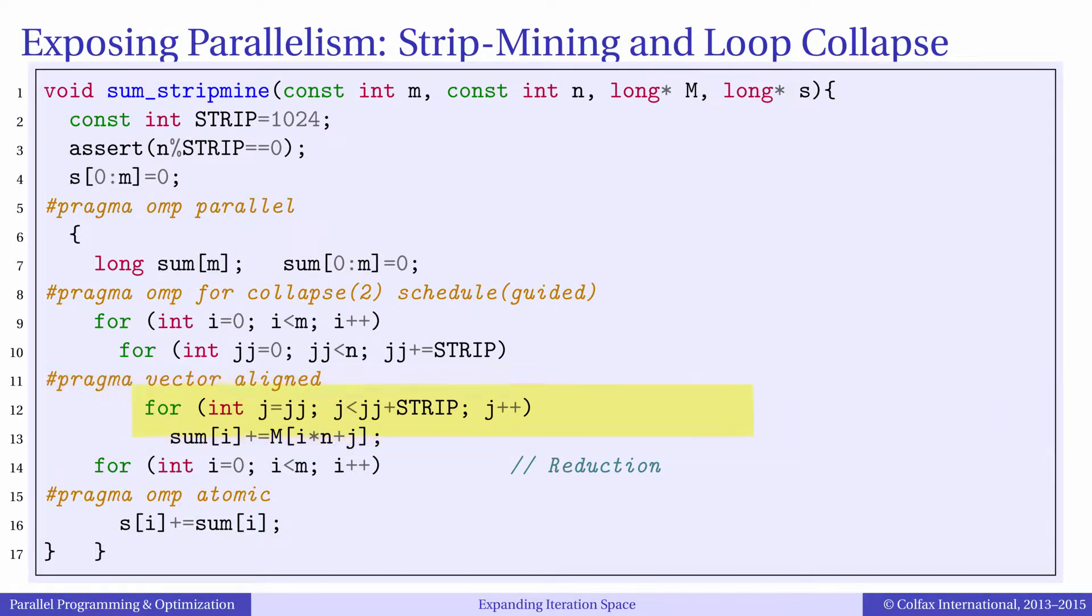The innermost loop in j is vectorized and it has 1024 iterations instead of the 100 million iterations in the original code. To process all the elements that we have in the matrix, we also have a loop in j which iterates with a stride of 1024.